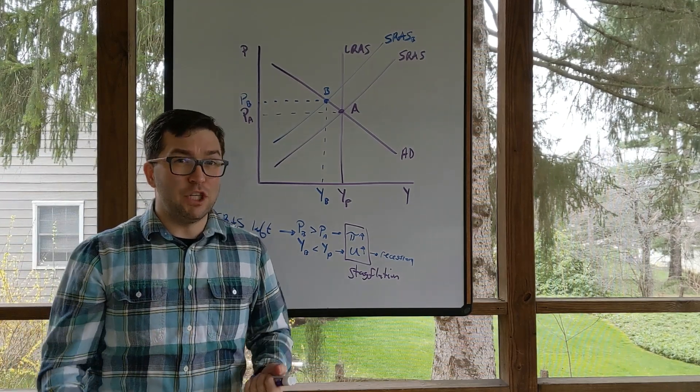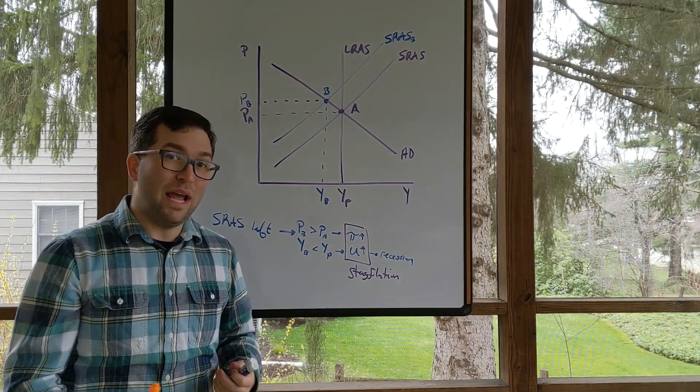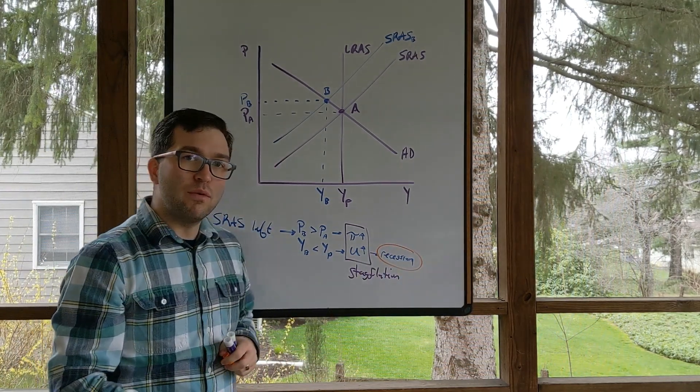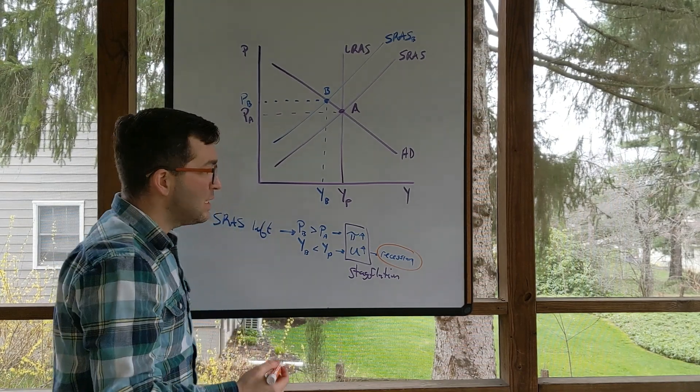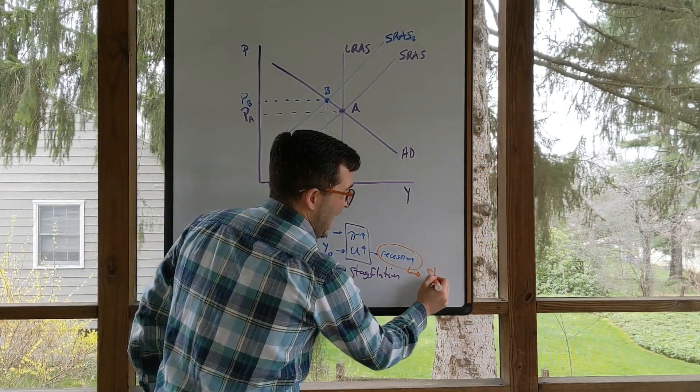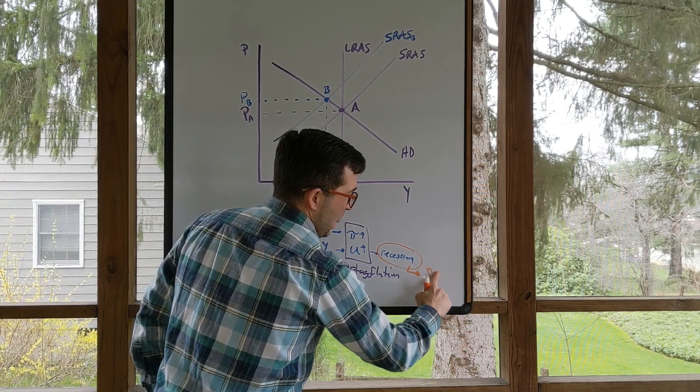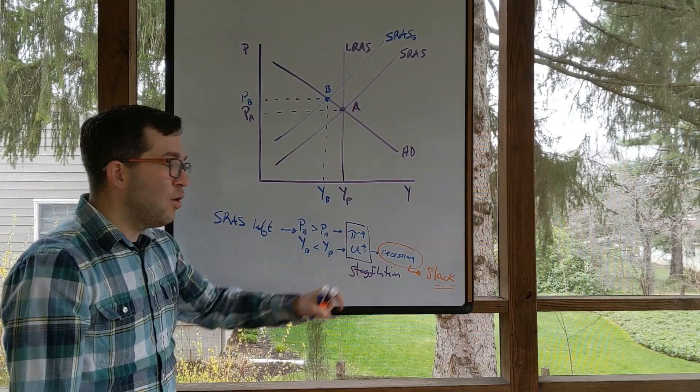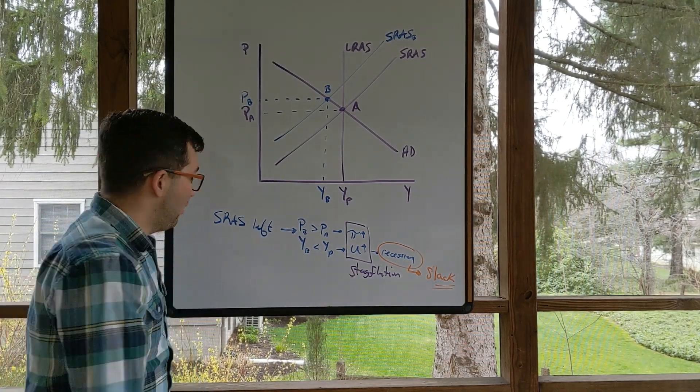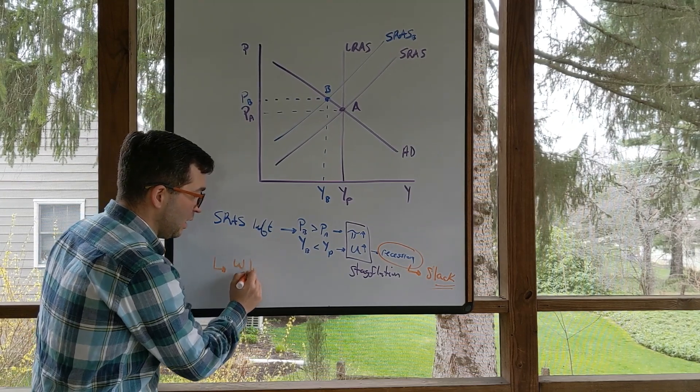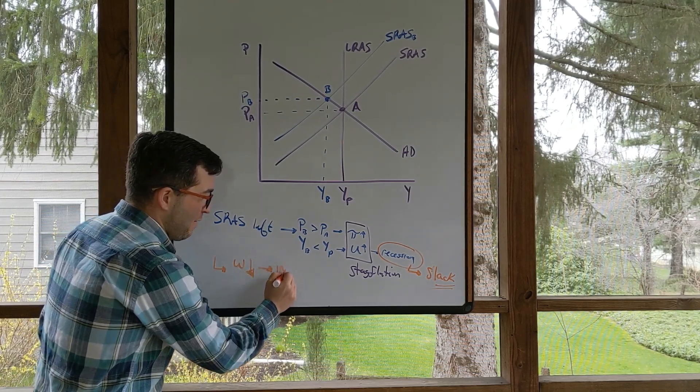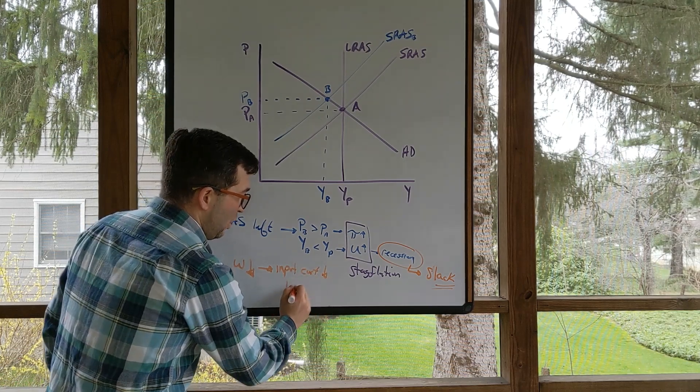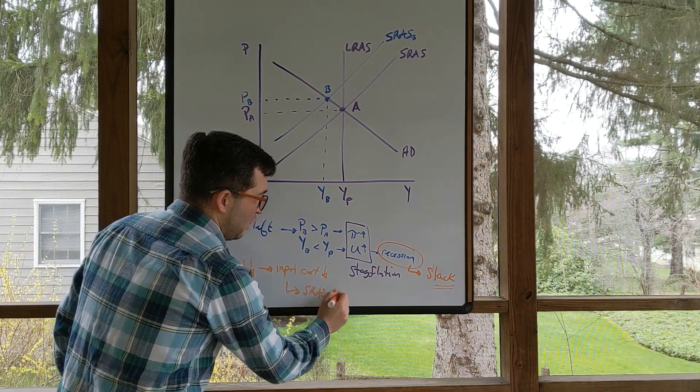So how does this self-adjust? Well, same exact way. We are in a recession. What does it mean if we're in a recession? Well, if we're in a recession, that means that there's going to be slack in that labor market. We know that slack in the labor market is going to lead to wages falling, which again will have input costs go down. So we'll see that short-run aggregate supply curve go to the right.